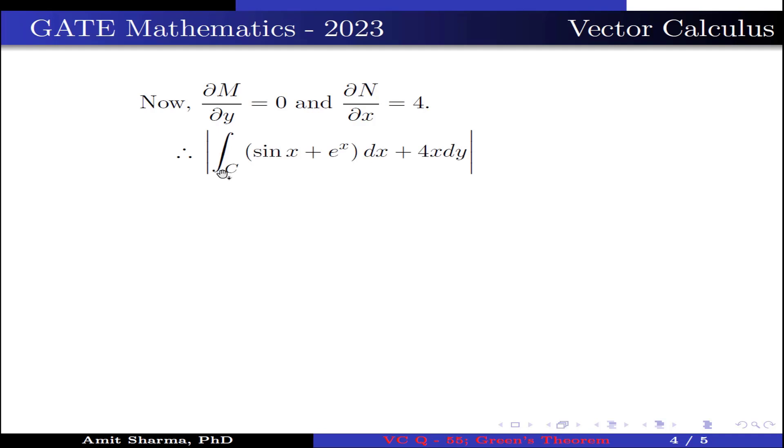Therefore, |∫_C (sin x + e^x)dx + 4x dy| is converted into |∬_S 4 dx dy|, where S is the surface area bounded by the circle x² + y² = 4, a circle of radius 2.